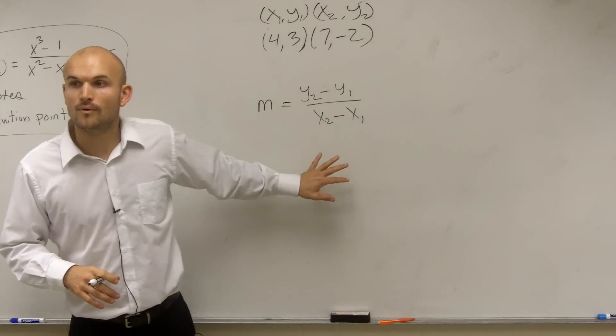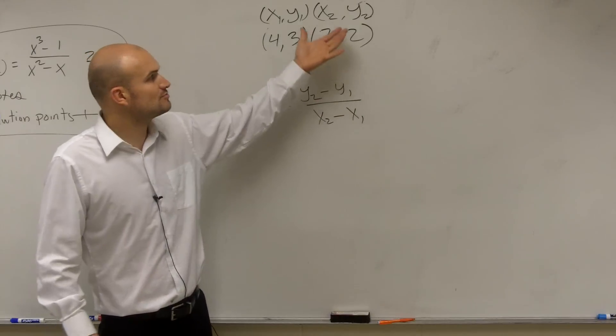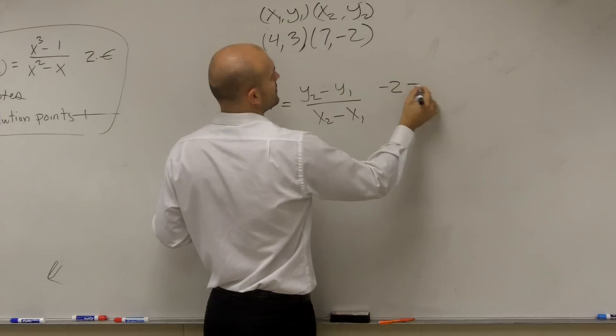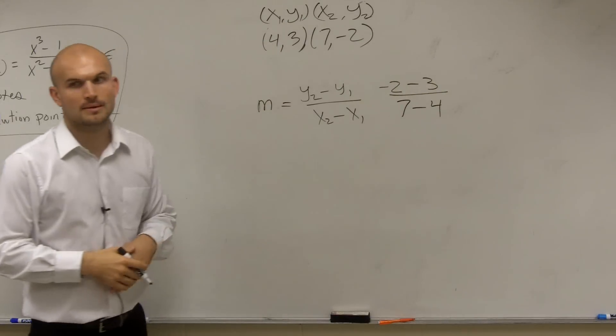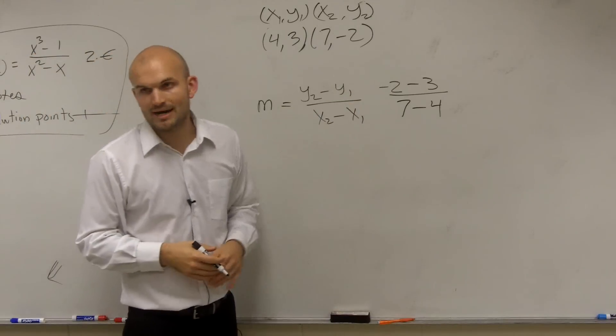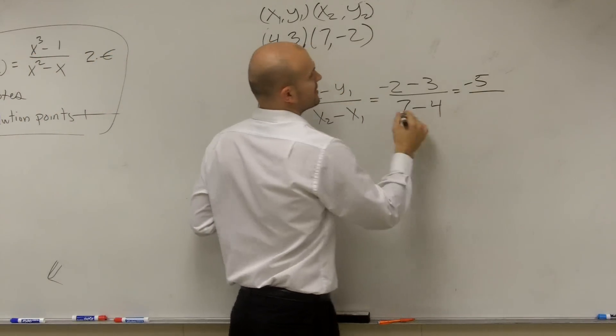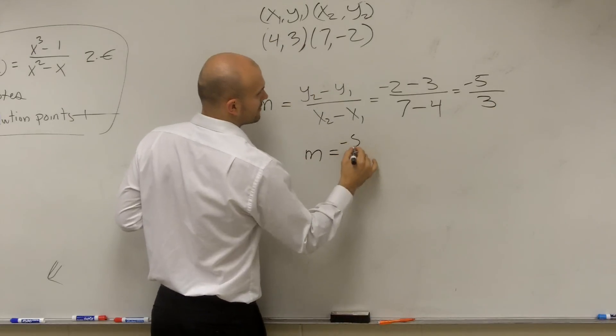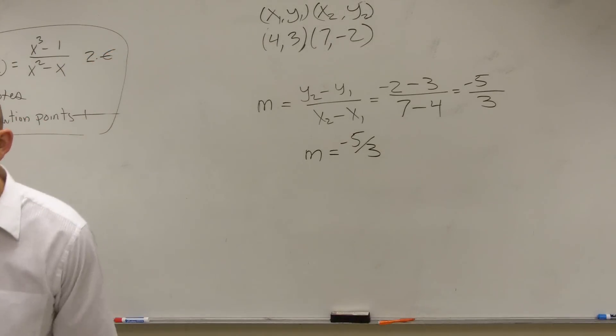So now when you're looking at this, if I want to find the change in the y values, I'm going to just subtract my y values. So I just do y2 minus y1. So I do negative 2 minus 3 over 7 minus 4. What's negative 2 minus 3? If you have negative $2 and you borrow three more, you're now negative 5. 7 minus 4 is 3. Therefore, your m, which is your slope, is negative 5 thirds. Any questions? Wow, a lot of people are making a lot of noise.